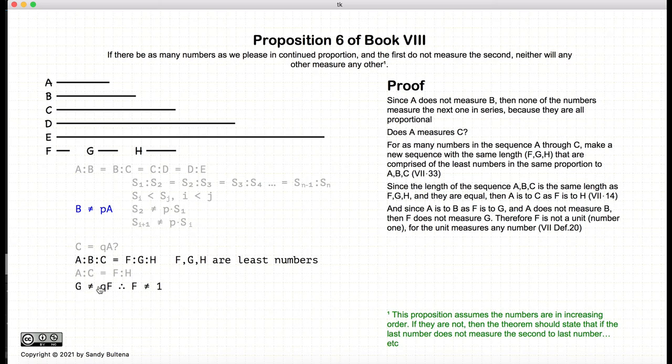So we know that F is not equal to 1, because if F is equal to 1, by definition of the number 1, it measures everything. So F is not equal to 1. Again looking at our F to H, if we take F and H, they are relatively prime. So H is not measured by F, so F does not measure H.